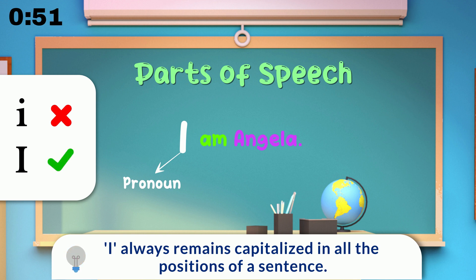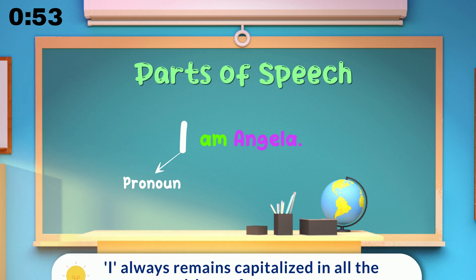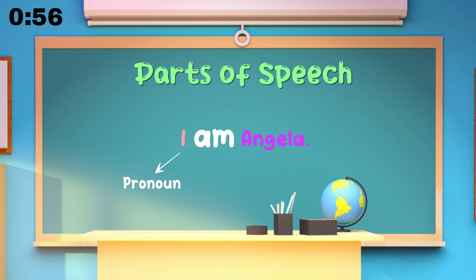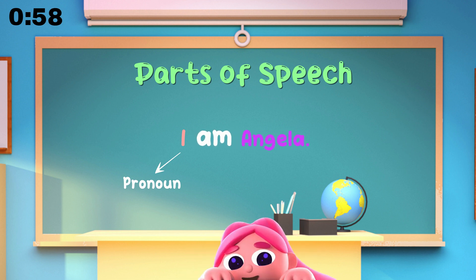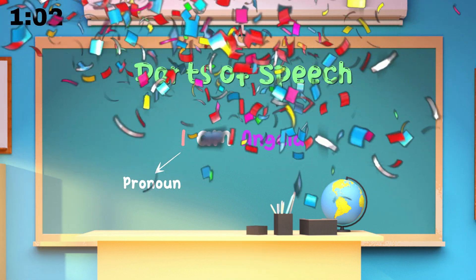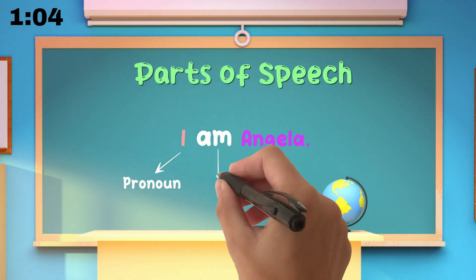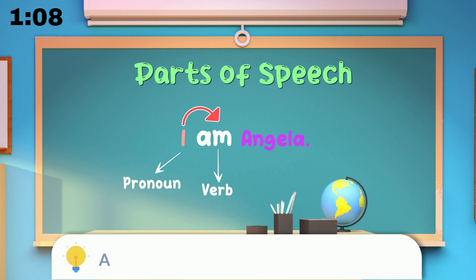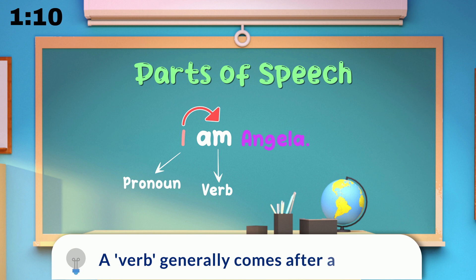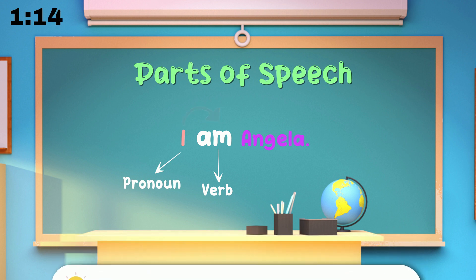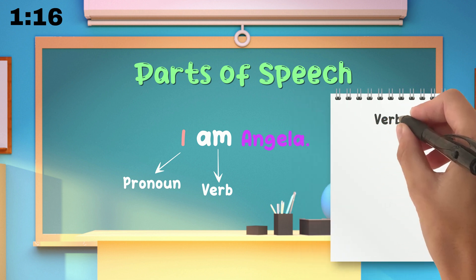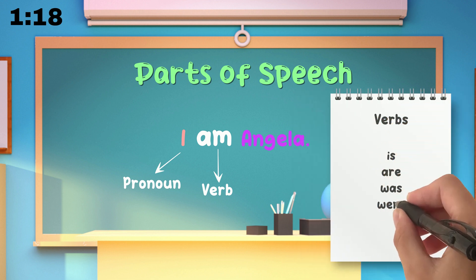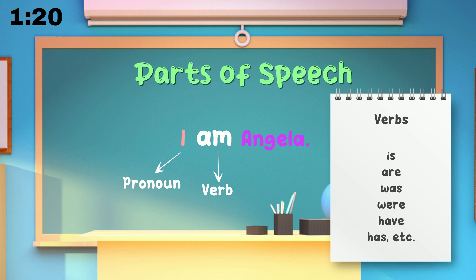How interesting! Let's move to the next word: 'am.' Do you know which part of speech it is? The word 'am' is a verb because it comes after the subject 'I.' Isn't it obvious that a verb generally comes after a subject? Let's have a look at some other similar verbs: is, are, was, were, have, has, etc.